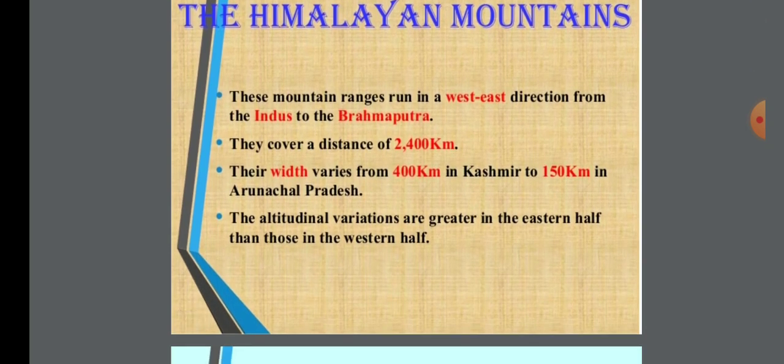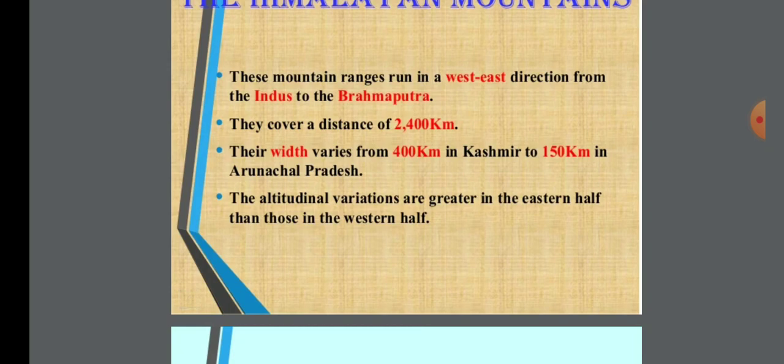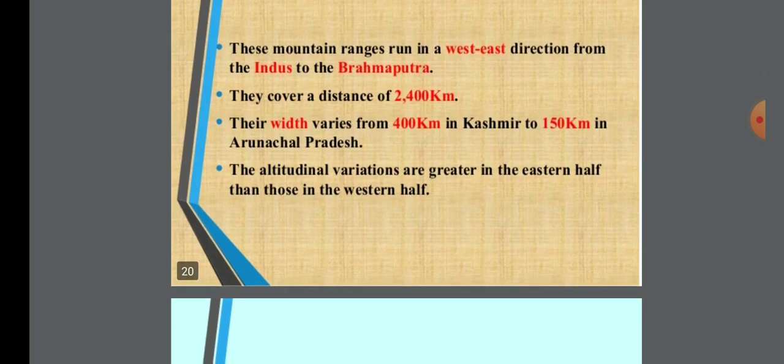The Himalayan mountain ranges run in the west to east direction, from the Indus to the Brahmaputra River. They cover a distance of 2400 km. The width varies from 400 km in Kashmir to 150 km in Arunachal Pradesh. The altitudinal variations are greater in the eastern half than in the western half.